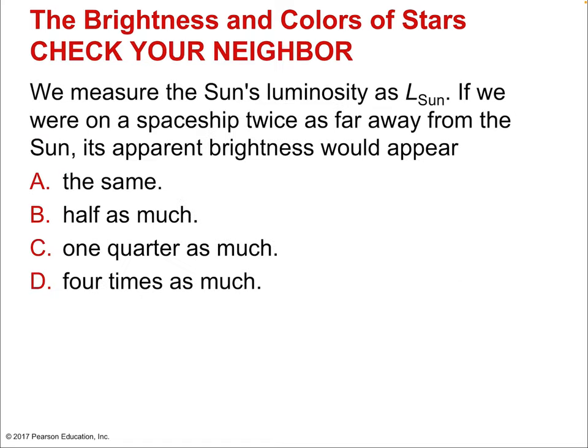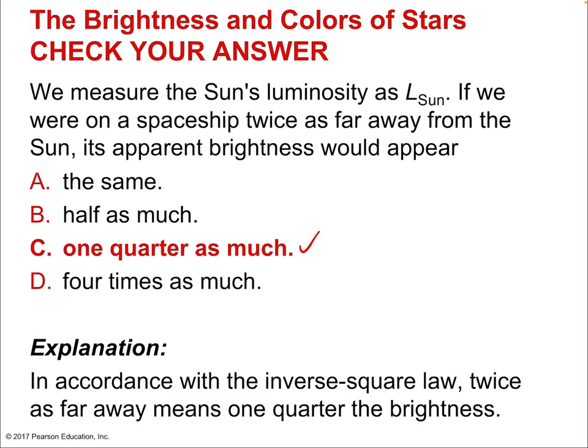We use fascinating independent techniques to determine star distances, such as pulsating stars where the pulse rate is directly tied to luminosity. Once we know a star's true luminosity, we can calculate its distance. Luminosity follows an inverse square law — proportional to one over distance squared — the same as Coulomb's law and gravitational force. If we were on a spaceship twice as far from the sun, its apparent brightness would appear one-quarter as much.